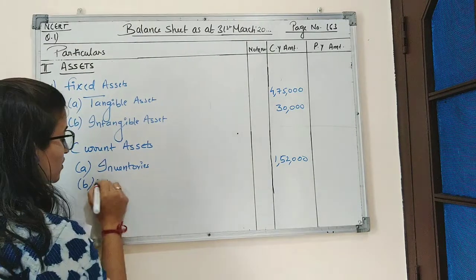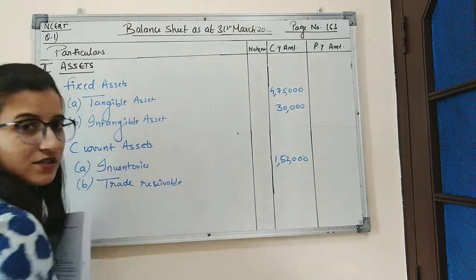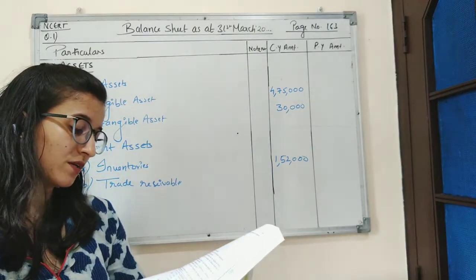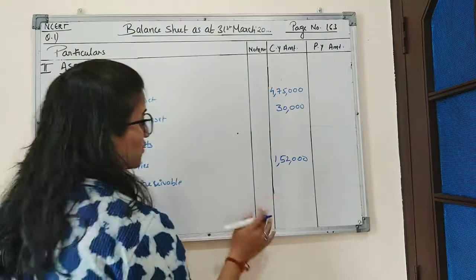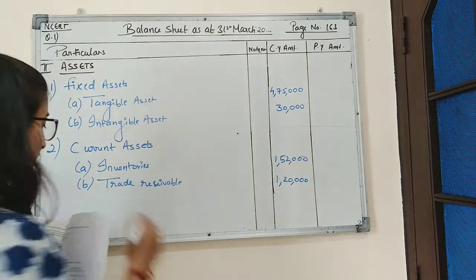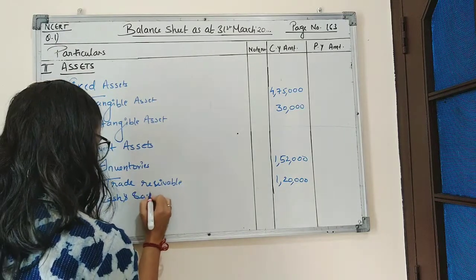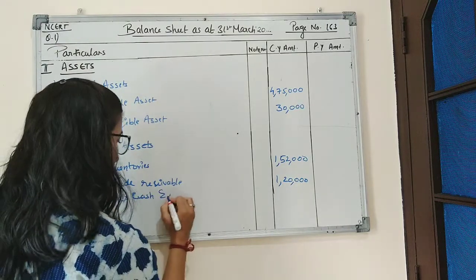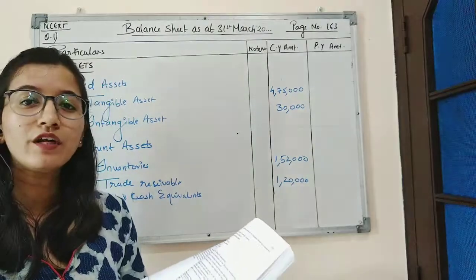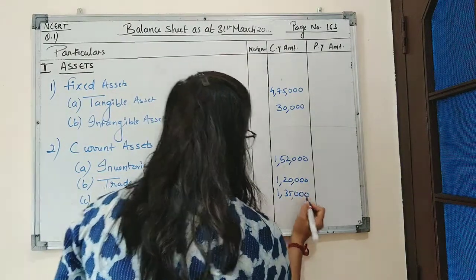The next sub-part is trade receivables. In trade receivables there are two things: first is bills receivable, and second is debtors. It is given in the question that bills receivable amount to ₹1,20,000, so we will write ₹1,20,000 in trade receivables. Third is cash and cash equivalents — it is given in the question that cash at bank amounts to ₹1,35,000, so we will write ₹1,35,000 in the current year.